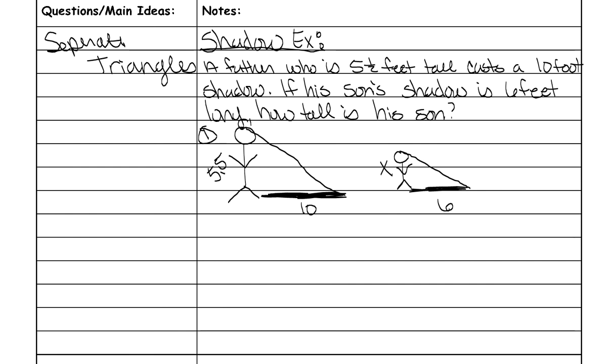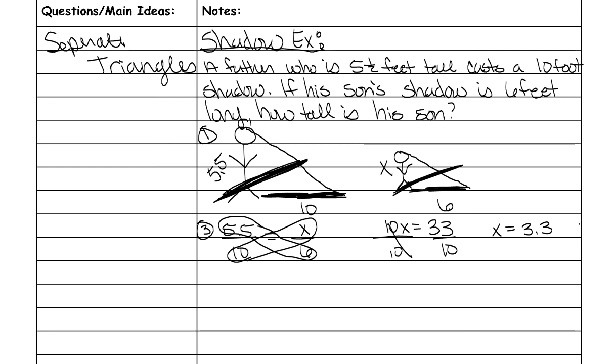You obviously do not have to separate these triangles. They're already separated so we don't have to do step two. But step three is to set up your proportions and solve. And remember they're already, your fractions are already there. You're going to do 5.5 over 10 and then x over 6. Now you cross multiply and solve. 10 times x is 10x and 5.5 times 6 is 33. Divide both sides by 10. 33 divided by 10 is 3.3. And what does that mean? Well that's how tall his son is. So his son is 3.3 feet tall.